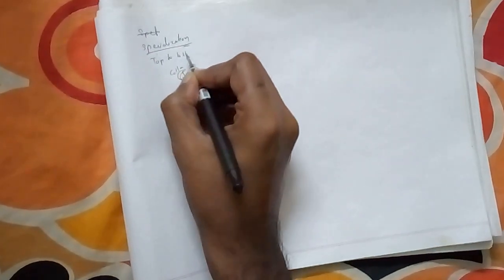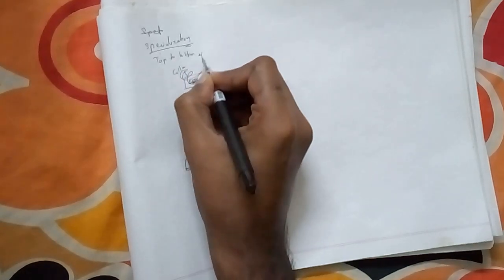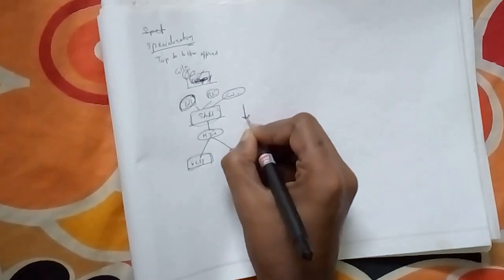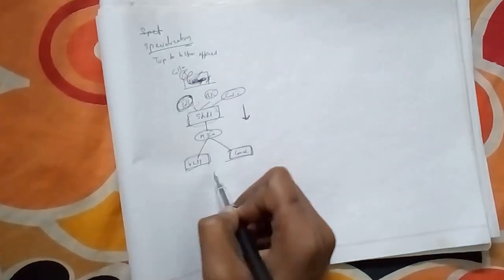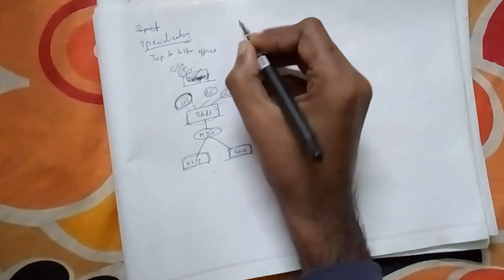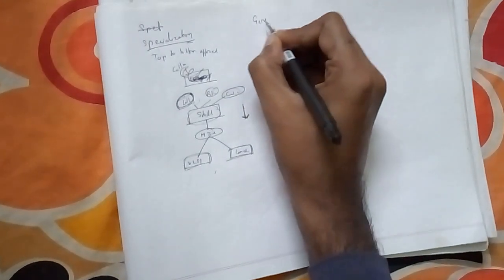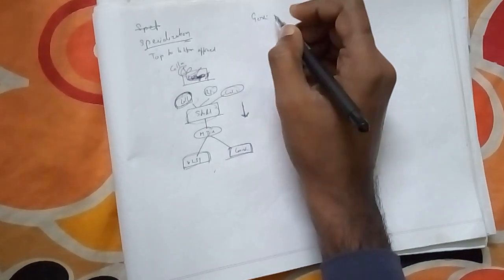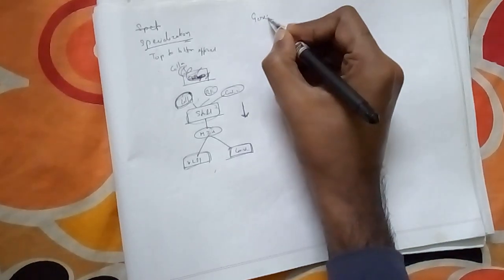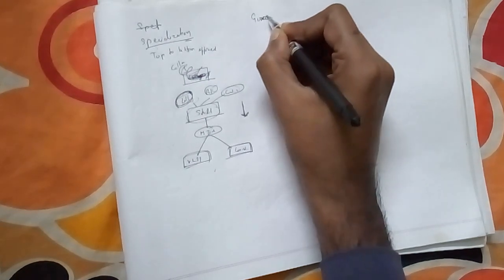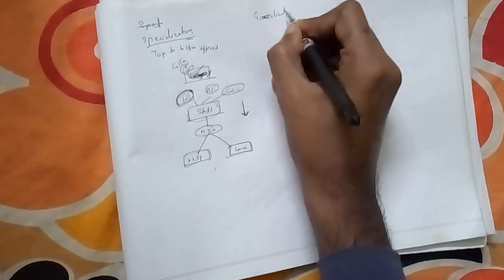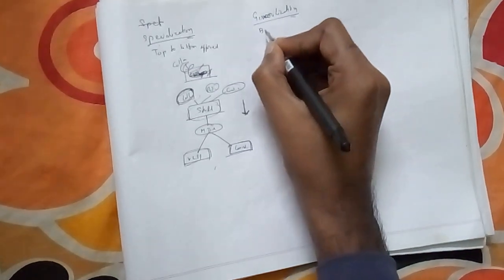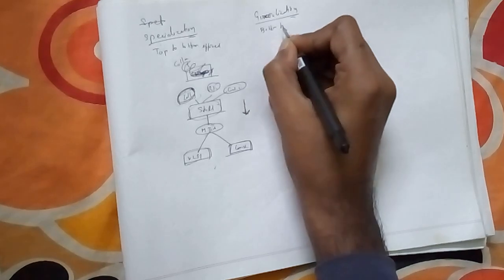Specialization is a top-to-bottom approach. From the top you are going to the bottom — that is your specialization. Now suppose we take generalization, which is the opposite of specialization. Generalization is a bottom-to-top approach.